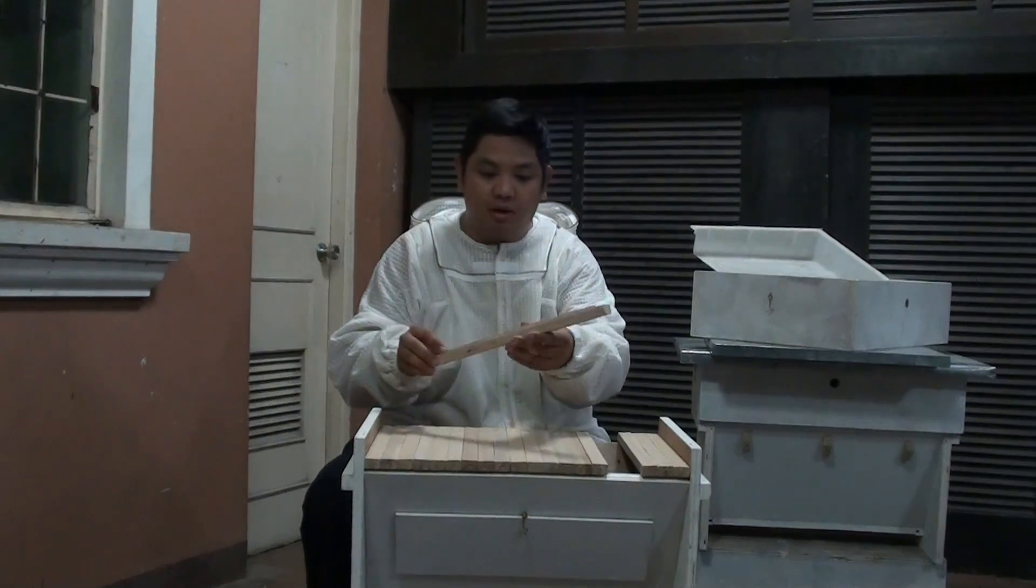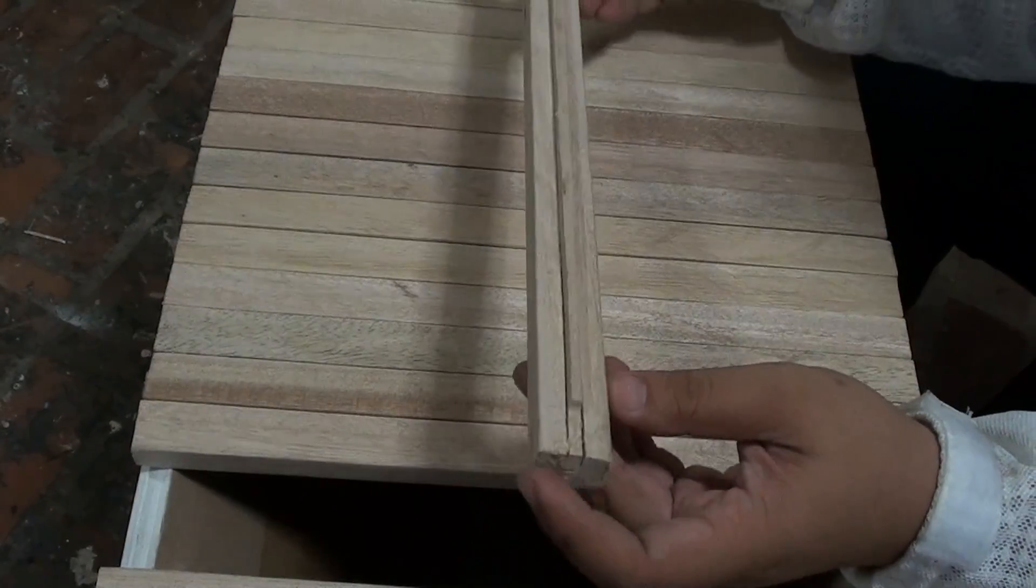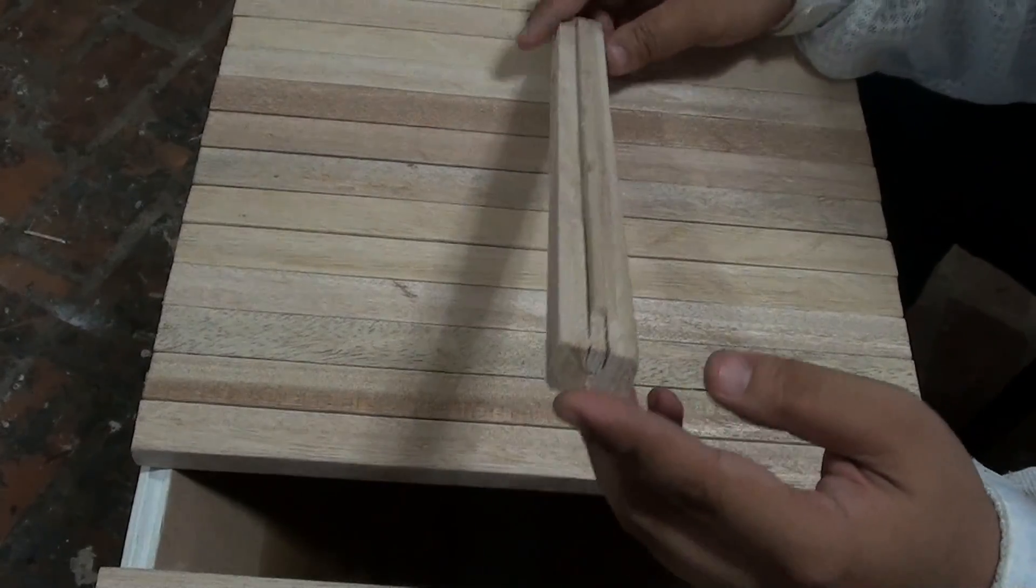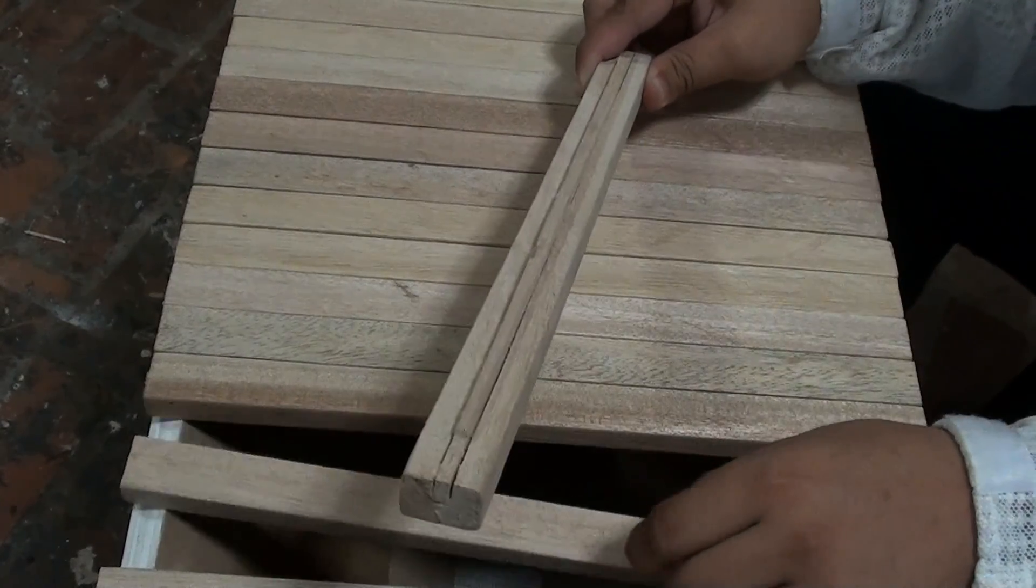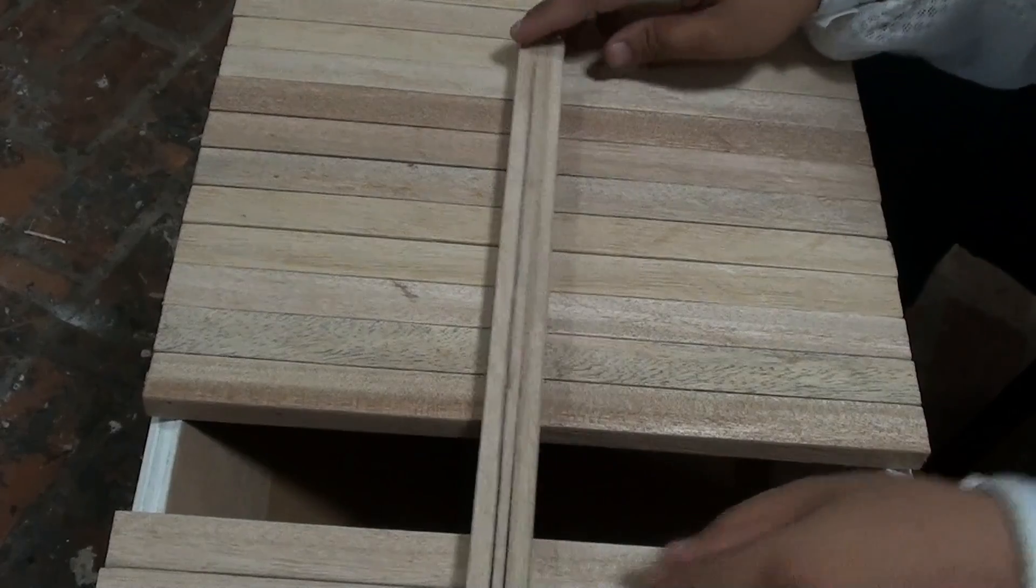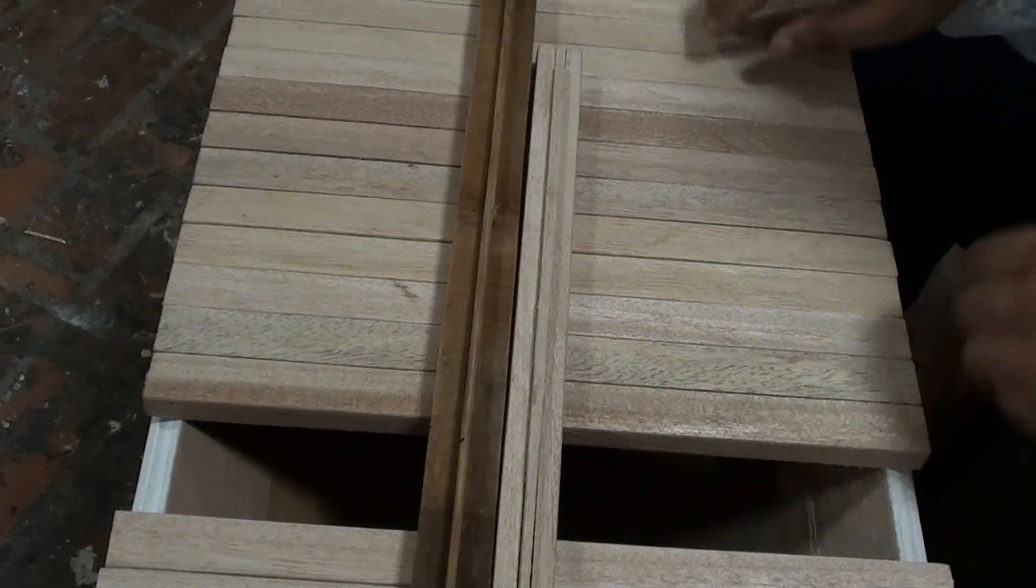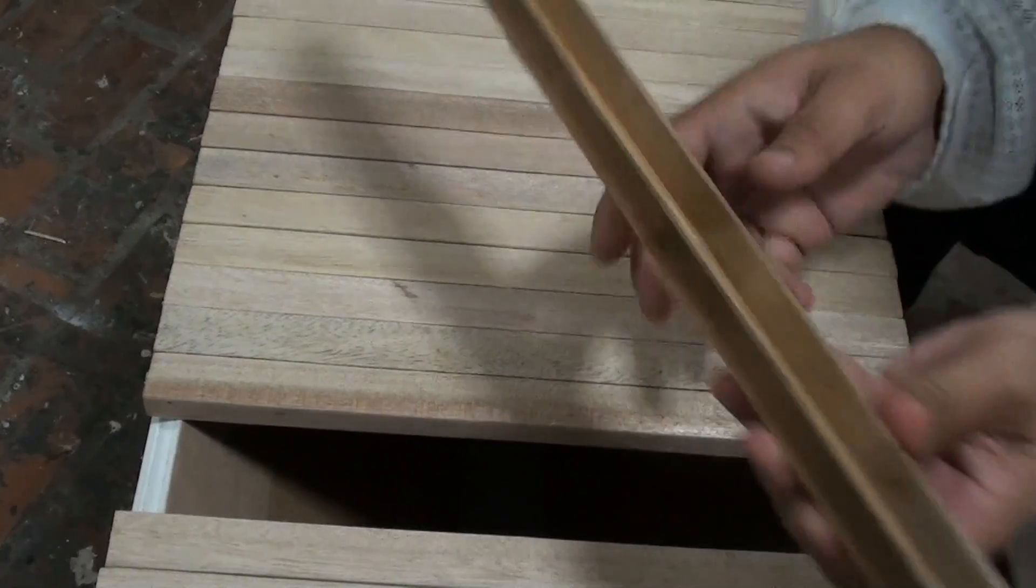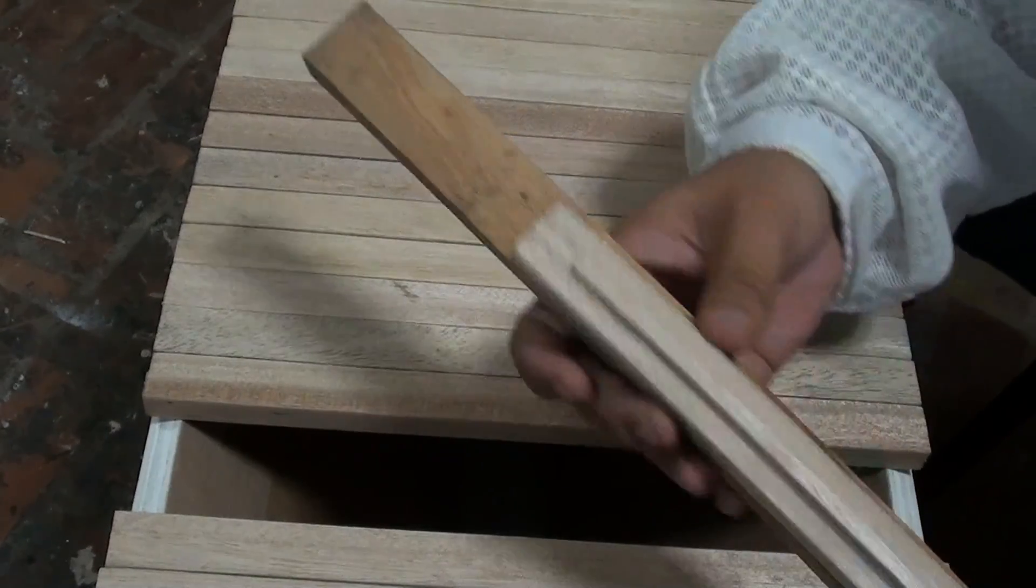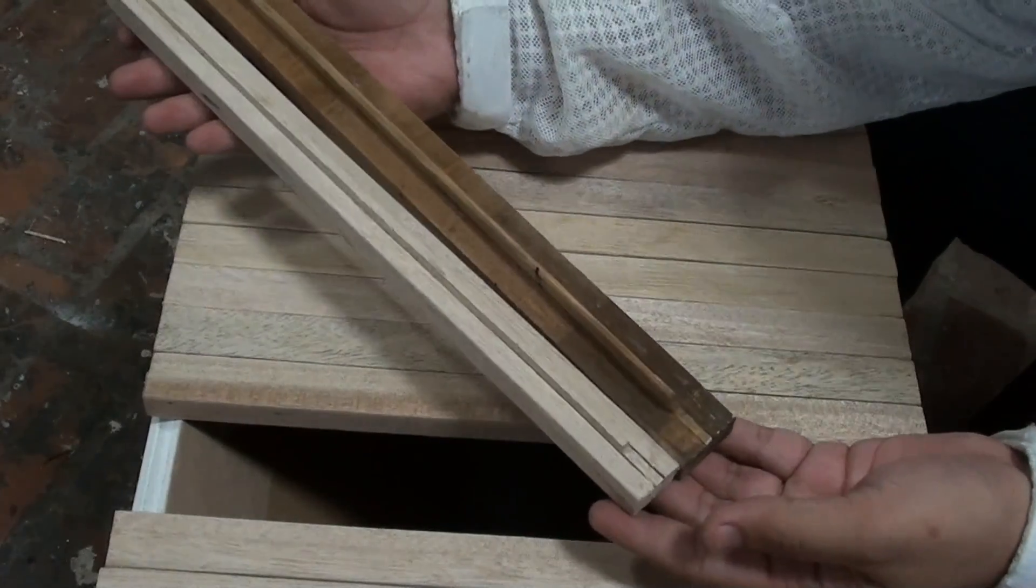Then we have smaller top bars with smaller guides. Here we have the top bar for the Apis Cerana. We have the same wood and the strip in the middle to ensure that the bees will build straight combs. Compared to the Apis Mellifera frame, here side by side, the Apis Cerana is smaller and shorter because the Apis Mellifera or the Italian honeybee is larger than the local Apis Cerana.